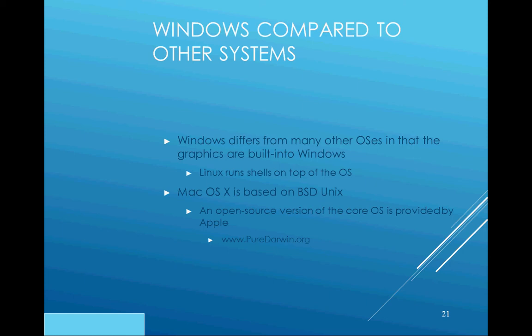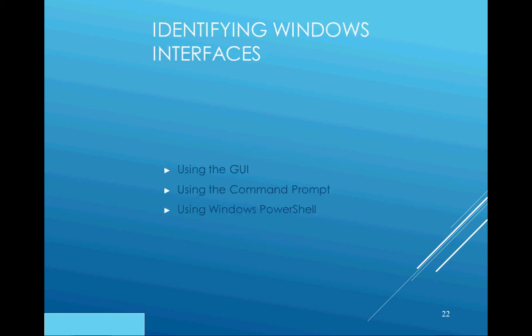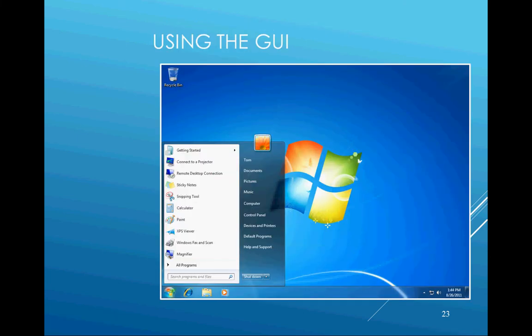Now let's look at the graphical user interface, command prompt, and PowerShell. In the Windows 7 GUI, the Start button has been replaced by the Windows orb, though most people still call it the Start button. You click it to launch programs. The orb is on the taskbar, and to the far right of the taskbar is the notification area where the clock and calendar are located. You can customize the look and feel by right-clicking the desktop, going to Properties.